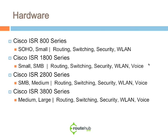The Cisco ISR 800 series is aimed at small and SMB environments and contains features for routing, switching, wireless, and voice. The 1861 model can be used with Cisco Call Manager Express and Cisco Unity Express for voice and unified communications. The Cisco ISR 2800 series includes models from the 2801 up to the 2851, offering similar capabilities but aimed at SMB and medium businesses.